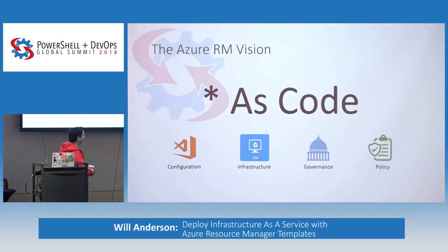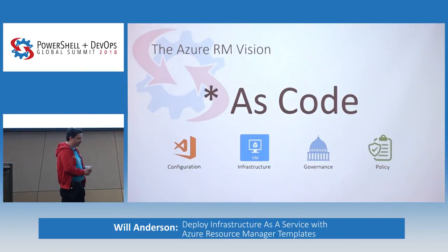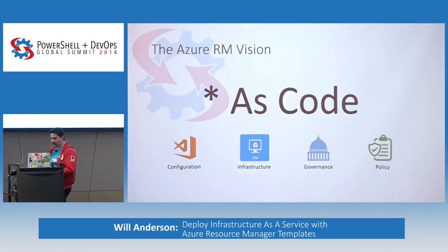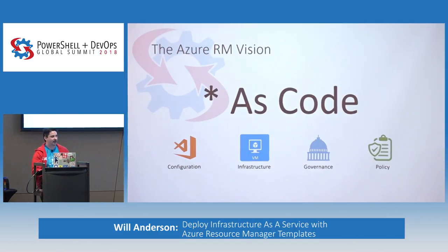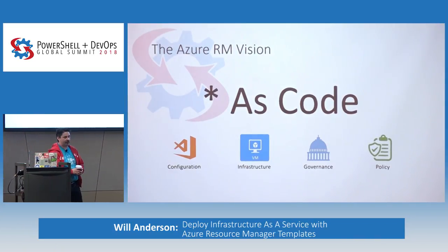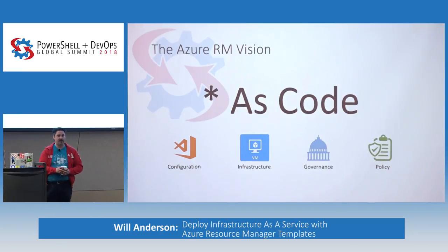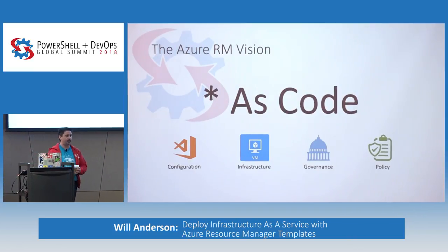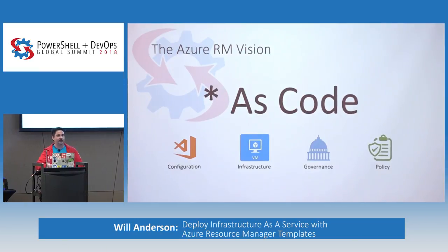The Azure vision: since they moved to the Azure RM model off of the classic model, everything has really been geared towards 'star as code' — regardless if it's configuration, infrastructure, even governance, policy. You're starting to see a lot of stuff like RBAC, role-based access and controls. A lot of that is designed to be automated through templates, and they're constantly iterating through that.